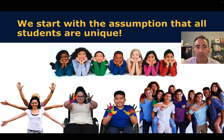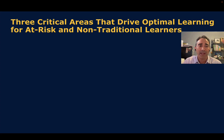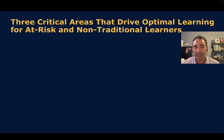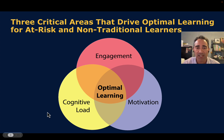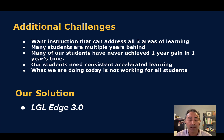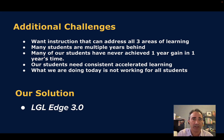That's a very important initial premise. The other way we approach learning is understanding that at-risk and non-traditional learners require special techniques to optimize learning. That means looking at cognitive load, motivation, and engagement. These three factors, when brought together, optimize learning for students. Many students on a personalized learning product have additional challenges — they may have been low for many years and never gained one year of growth in one year's time. We need a program that works for these students using a different approach, and that's what Edge 3.0 does.